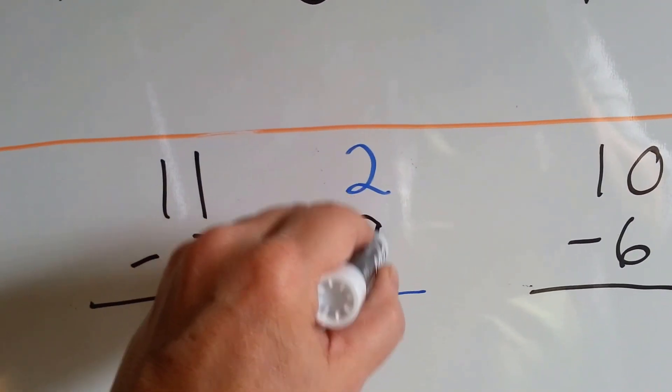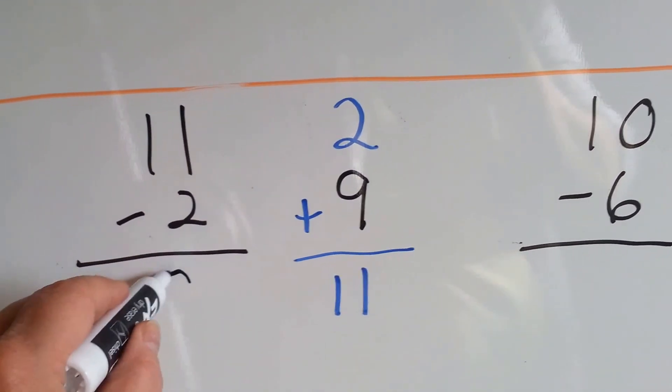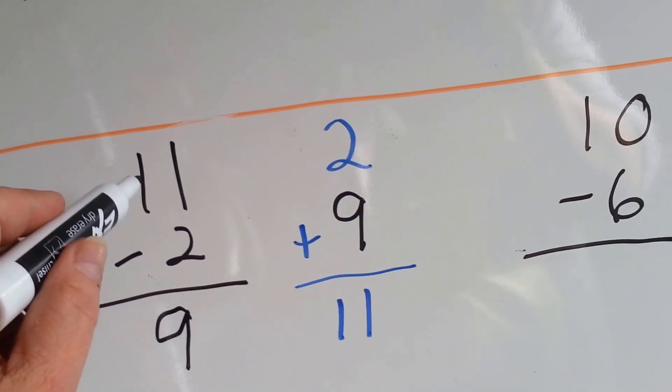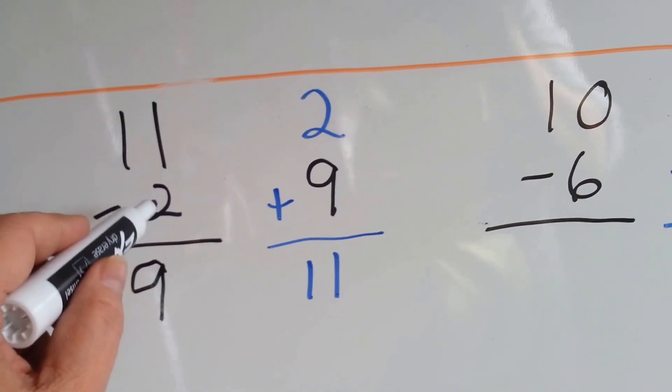So, 2 plus 9 is equal to 11, which means 11 take away 2 is 9. We also could have counted down and said 11, 10, 9, and took the 2 away.